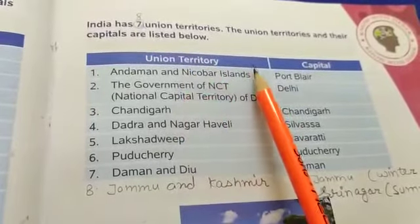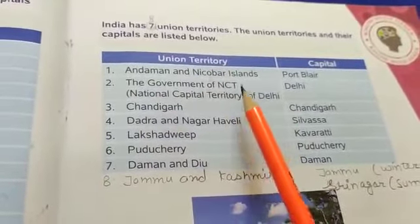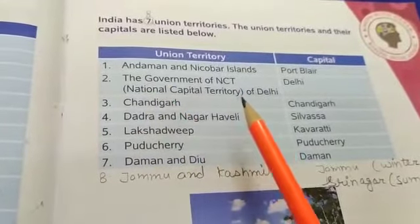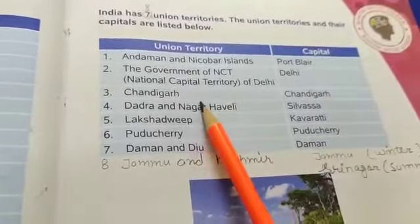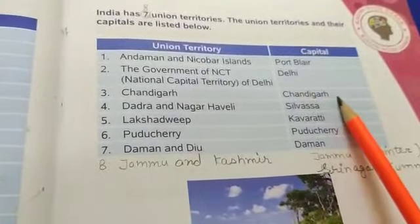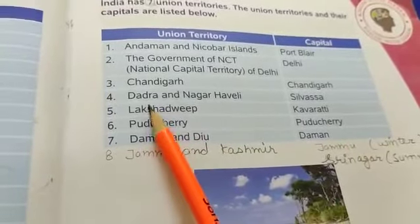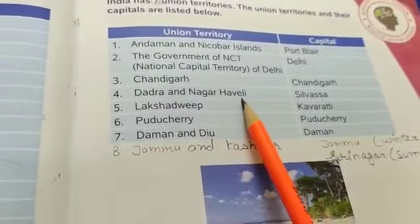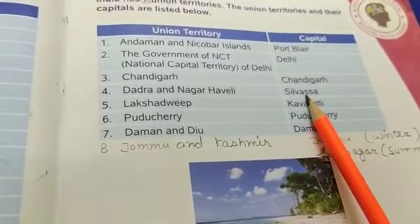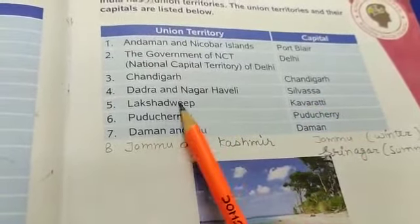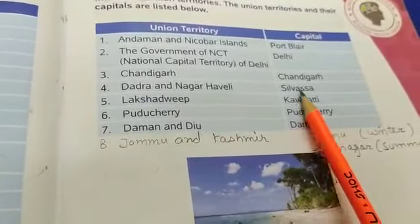A union territory is also called Kendri Shasit Pradesh. The NCT — National Capital Territory of Delhi — and the capital is Delhi. Chandigarh is a union territory and the capital of Chandigarh is Chandigarh. Dadra and Nagar Haveli is a union territory and the capital of Dadra and Nagar Haveli is Silvassa.